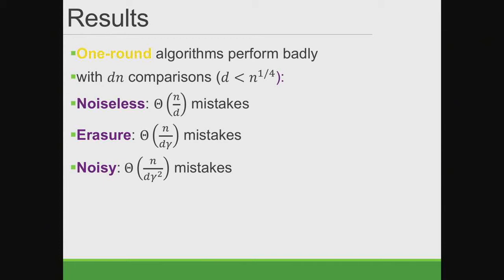Here are our results. For one-round algorithms, we show they perform badly: if you don't spend much more than a linear number of comparisons, you must make many mistakes. We show matching upper and lower bounds. In the erasure case you get one-over-gamma mistakes; in the noisy case you get one-over-gamma-squared mistakes. We show algorithms achieving these bounds and prove they are tight. In our work we assume K is Theta(N), and N minus K is also Theta(N) — like finding the top half.